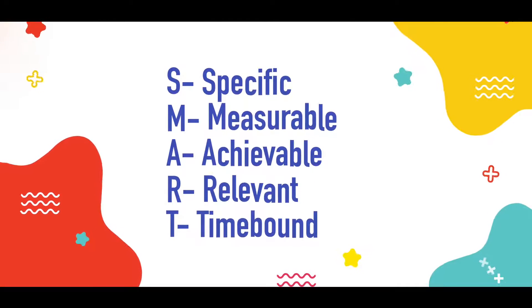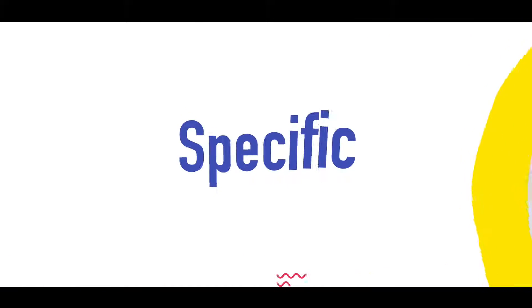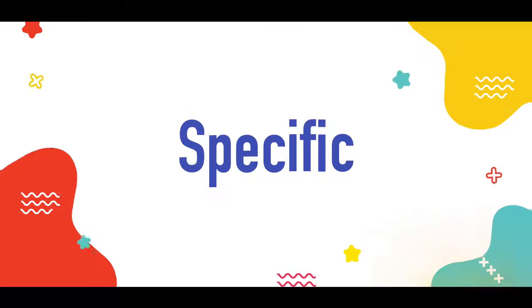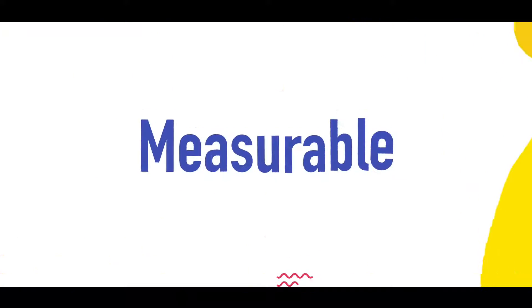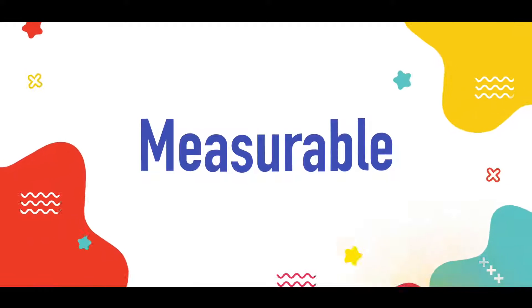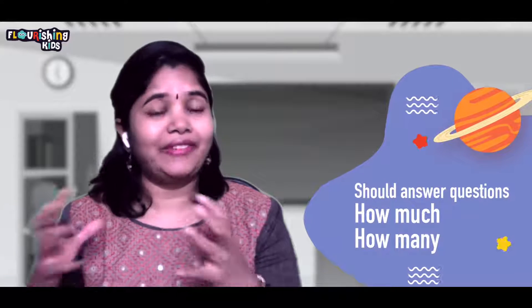A specific goal will answer all these questions: what, where, why, when — all these questions would be answered if the goal is specific. Measurable: if the goal is measurable, it would answer the questions like how much, how many, and how will I know whether I have accomplished this goal.